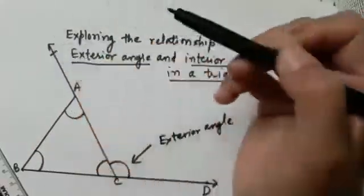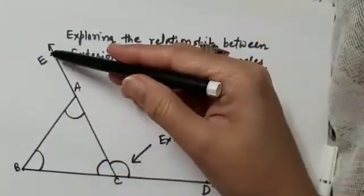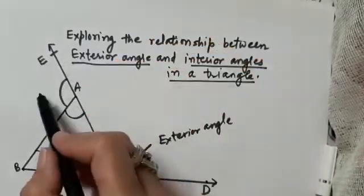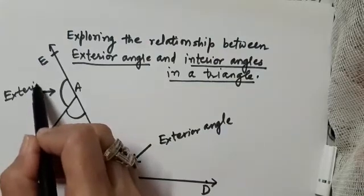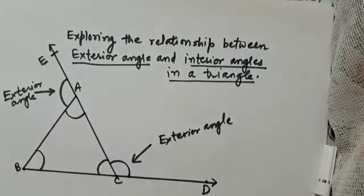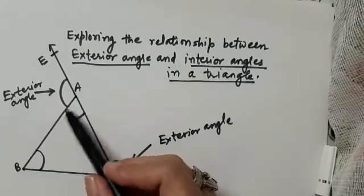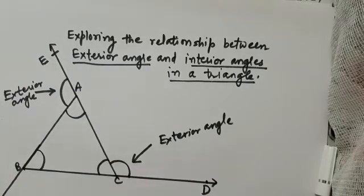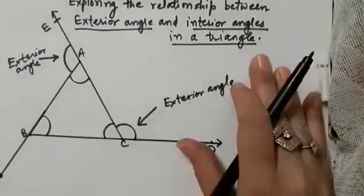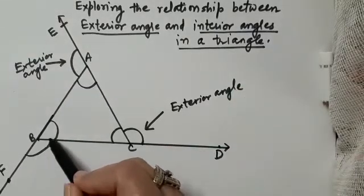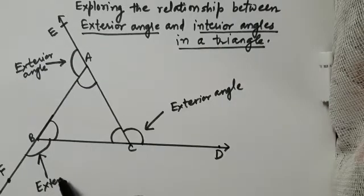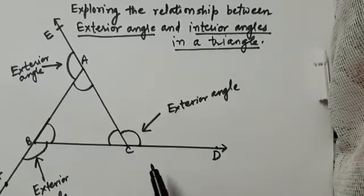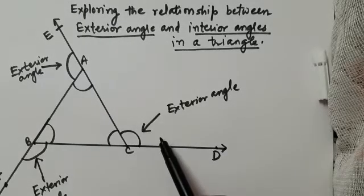Similarly, if we extend side CA to point E to make ray CE, we get another angle: angle EAB. This is also an exterior angle of this triangle. For the third exterior angle, we extend side AB to point F, and we get angle FBC. So now we are going to explore the relationship between the exterior angle and the interior angles of the triangle.